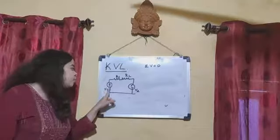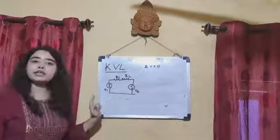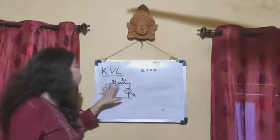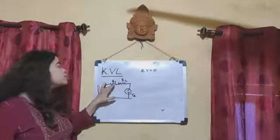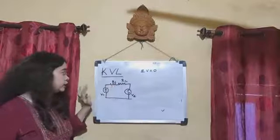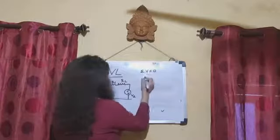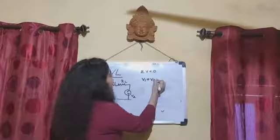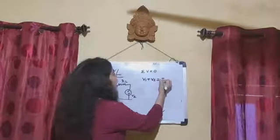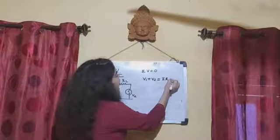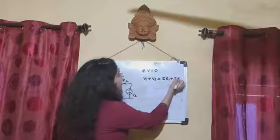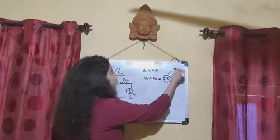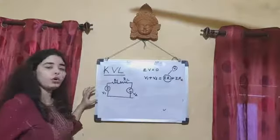One more definition: the algebraic sum of the voltage provided to that circuit is equal to the algebraic sum of voltage drop across these elements. So we can write in mathematical form: V1 plus V2 is equal to IR1 plus IR2. Here IR1 is voltage according to Ohm's law.